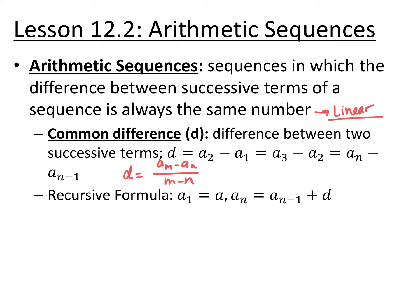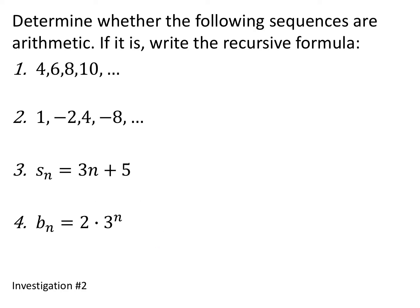So if you don't have two consecutive terms but you have any two terms, you can use the slope formula to find your common difference. Subtract the two terms and divide by the two term numbers subtracted. Looking at these four sequences, we want to determine whether or not they are arithmetic, and if they are, to write their recursive formula.